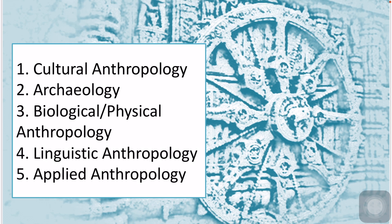There are also logical reasons for the unity of American anthropology. Each subfield considers variation in time and space — that is, in different geographic areas. Cultural and archaeological anthropologists study changes in social life and customs. Archaeologists use studies of living societies to imagine what life might have been like in the past, and biological anthropologists examine evolutionary changes in physical form.